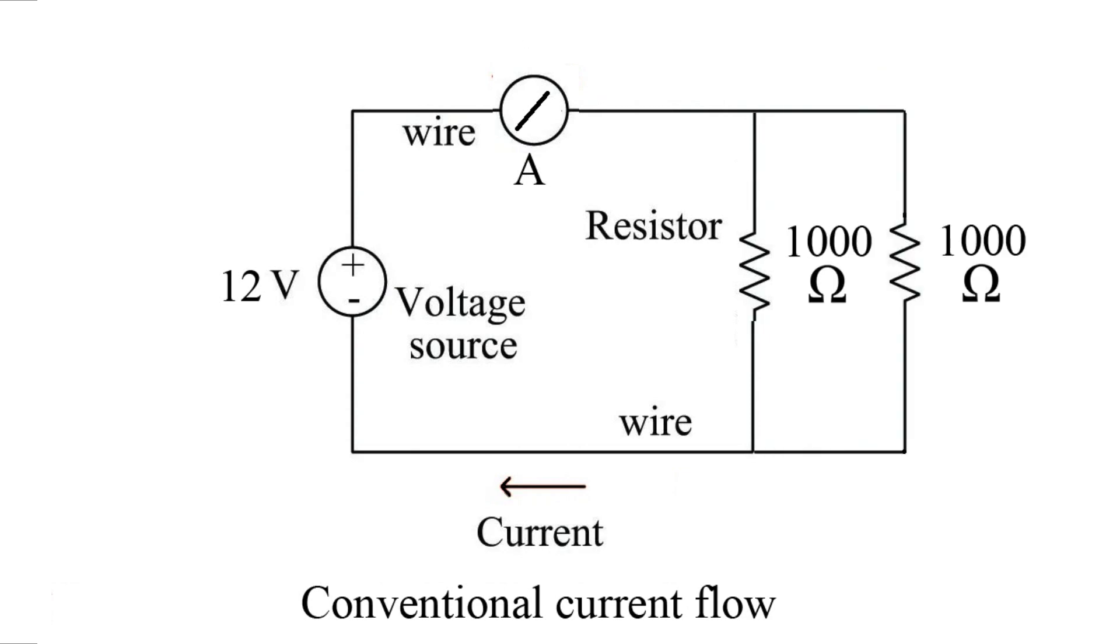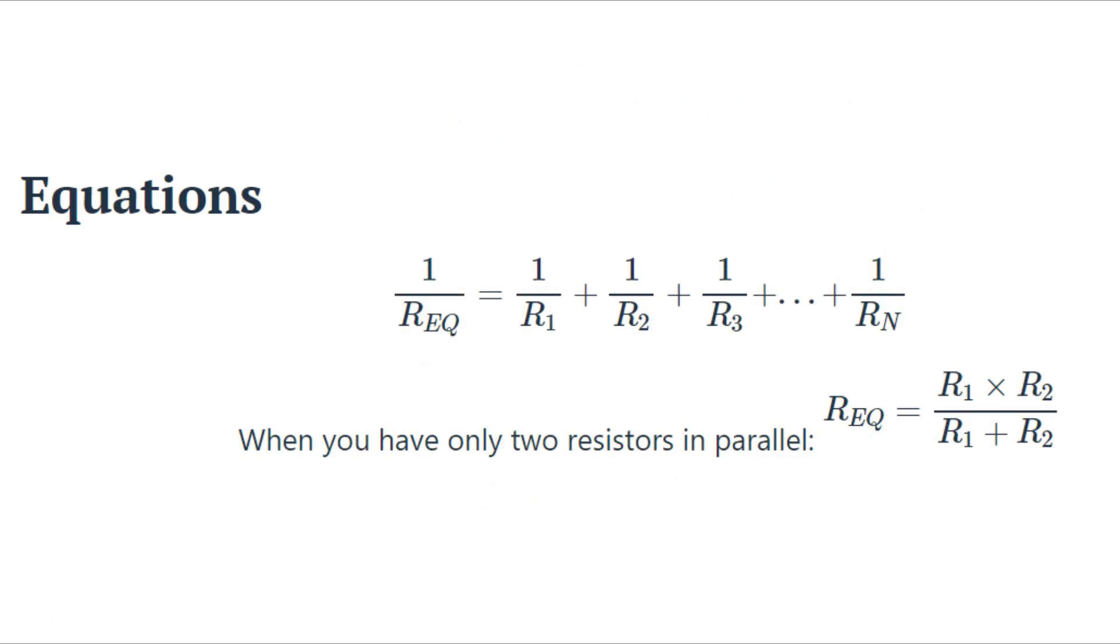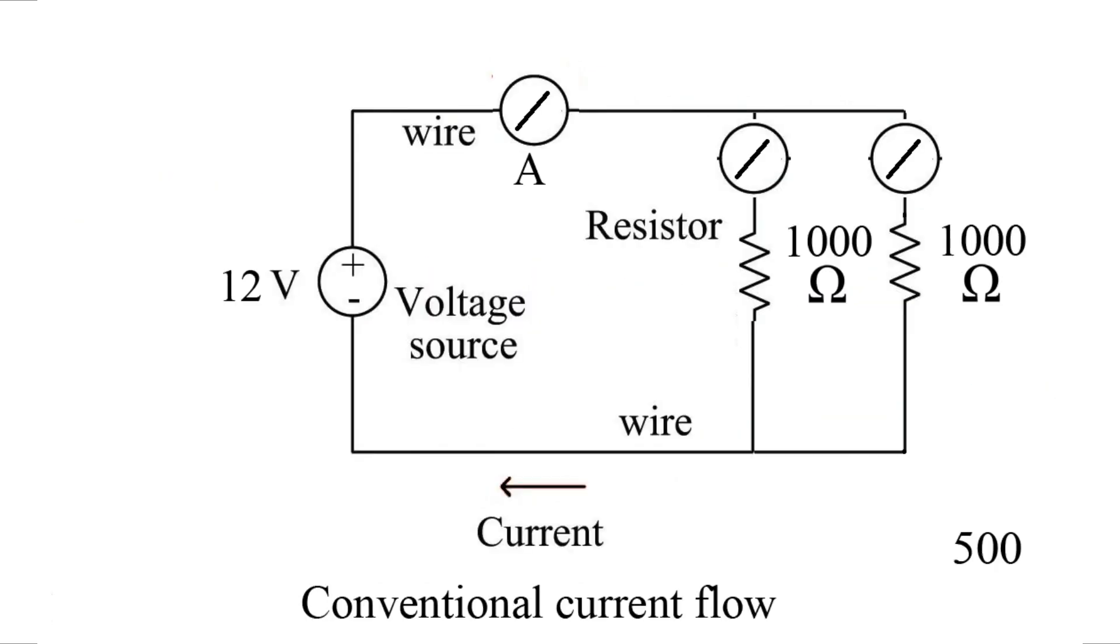Our last one is parallel resistors. With parallel resistors, we need a small equation. After running our two resistors through the equation, we end up with 500 ohms. So again, we want to find out our current, so we use I equals voltage over resistance. So 12 volts divided by 500, we come up with 24 milliamps.